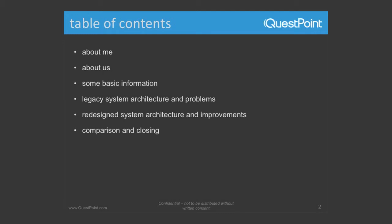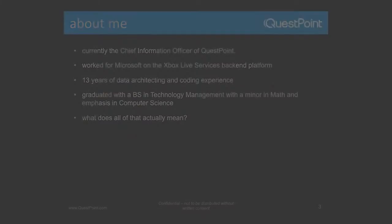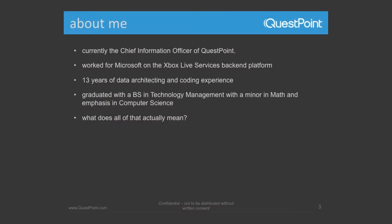I've got my little tech nerd there if you have some serious questions. So about me — I'm currently the Chief Information Officer at QuestPoint. Before that, I spent a few years at Microsoft designing the backend system for Xbox Live. Roughly 13 years of computer work, whether it be data architecture or coding. I went to school for math and computer science, and realized I didn't need to graduate with that because I had it mostly down, but I stink at business. So I graduated with technology management. What does all that really mean? I'm a giant nerd.